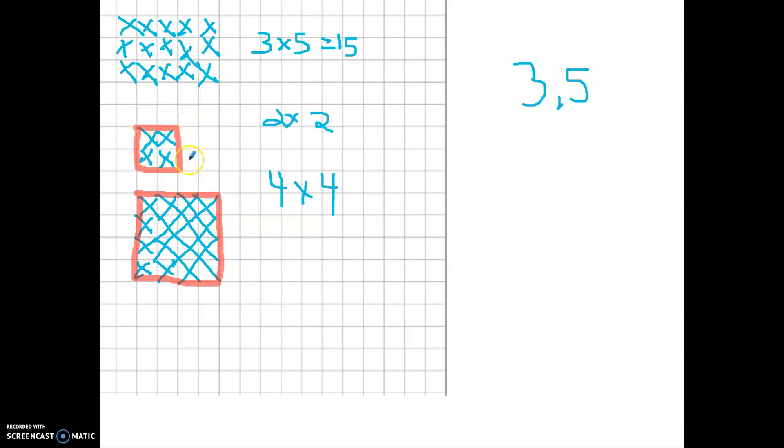Now, what do you notice about these arrays? Well, if I were to trace my arrays, the outside, each one of these would be in the shape of a square where all the sides are exactly the same. So, this is two, two, two, and two. This one is four, four, four, and four. And we call those square numbers. Anytime I'm multiplying, when the factors are the same, we call those square numbers. And that's something that we will be working on over the next couple days.